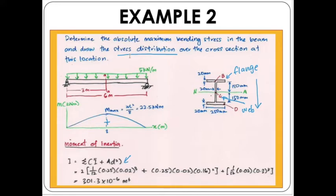Sigma maximum occurs at the top of the top flange and also at the bottom flange. So we have two equal values of sigma maximum — one in compression at the top and one in tension at the bottom of the beam.